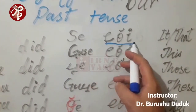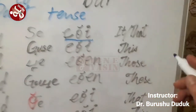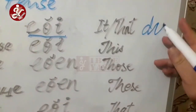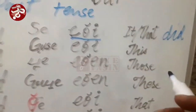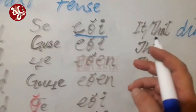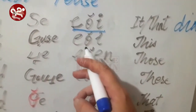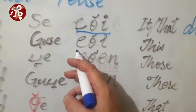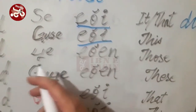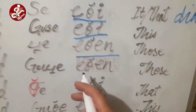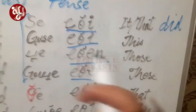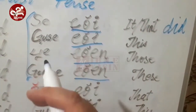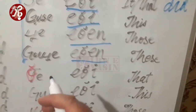Now we come to the non-living beings and animals. 'Se eti' means 'it did'. 'Gusei eti' refers to something at a far distance, while 'gusei' is for a near distance. 'Che eten' means 'those did'. These forms — 'se', 'gusei', 'gusei', 'che' — are used for solid things or animals.